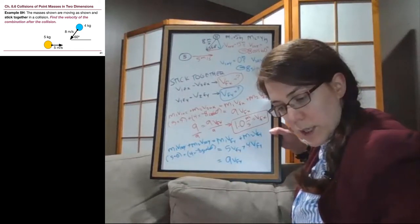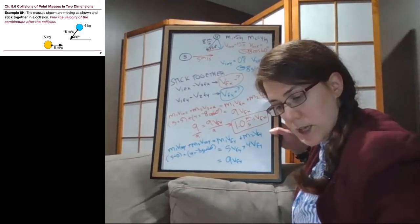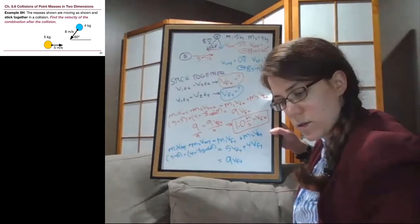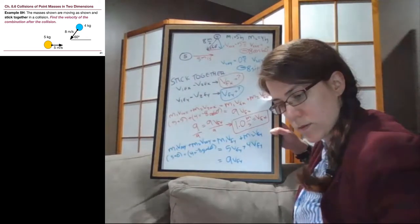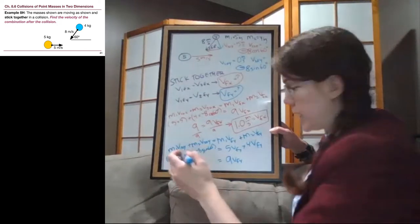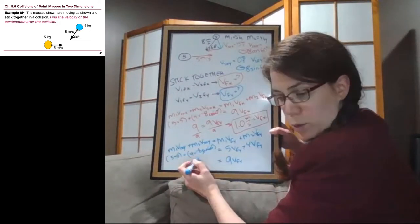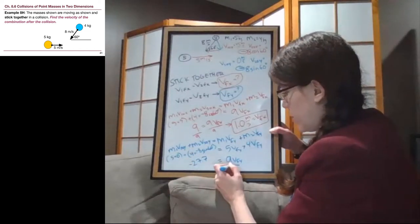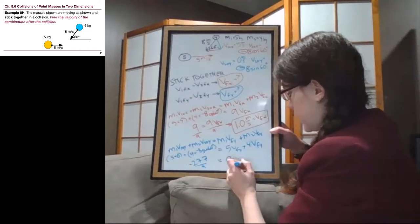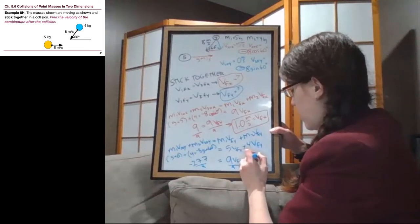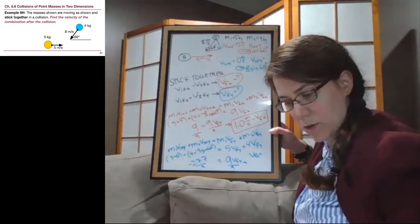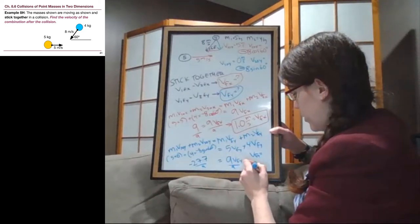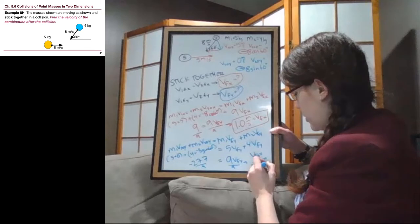Okay, on the left side, we're going to have 4 times negative 8 times the sine of 60, which is negative 27.7. We can divide both sides by 9 to get that v final y, and I know it's way down here in the corner. I'm sorry about that, is negative 3.1, negative 3.1 meters per second.